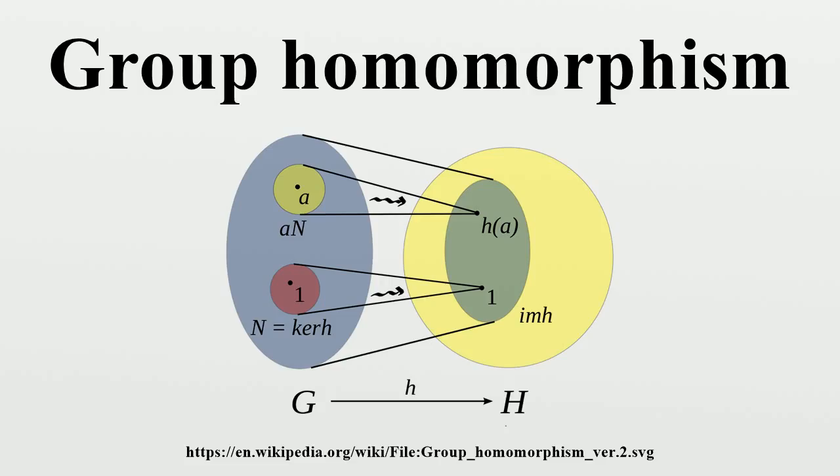Consider the group... for any complex number u the function f_u: G → C defined by... is a group homomorphism.